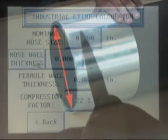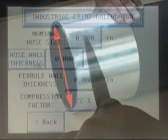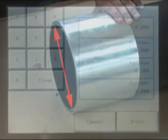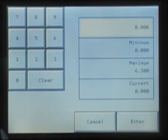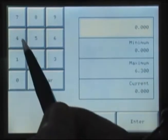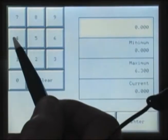Simply measure the nominal hose size, which is the inside diameter of the hose being crimped, and press the Nominal Hose Size button to enter the hose size. Note that the hose size must be entered as a decimal dimension.